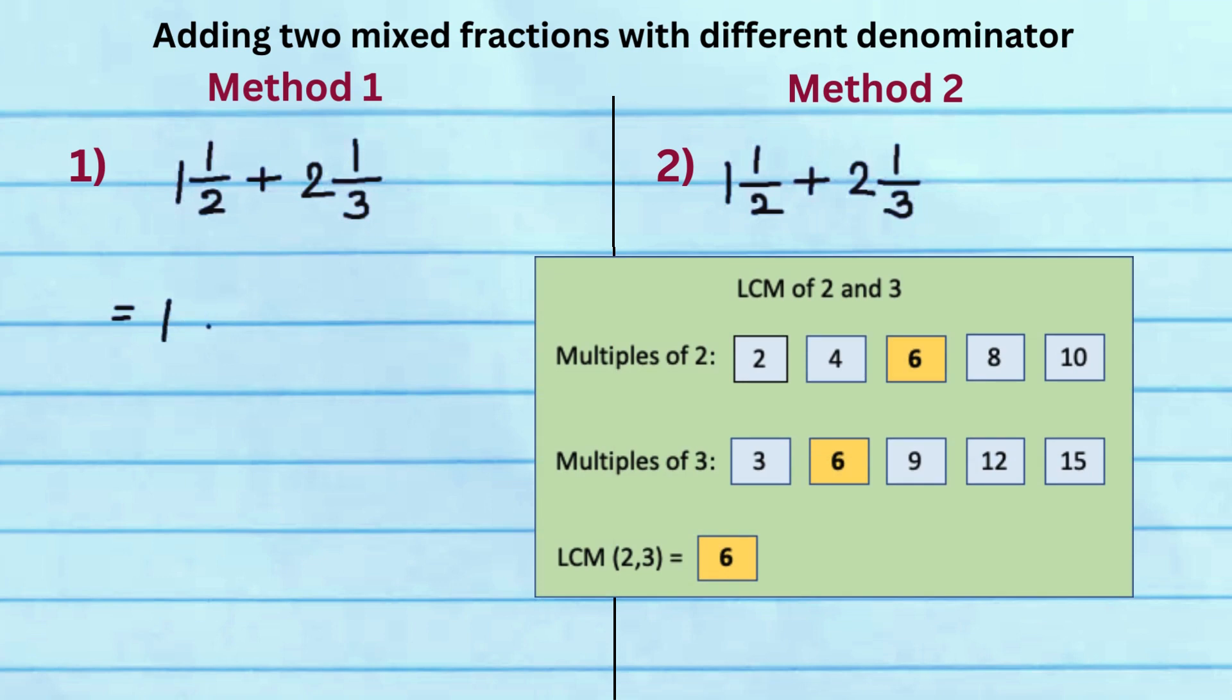In method 1, LCM of 2 and 3 is 6. Rewrite each fraction 1 half and 1 third with common denominator 6.